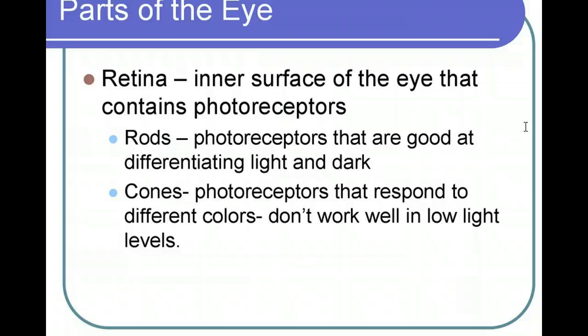The type of cells in your eyes that see color are the cones. The cones respond to different colors — they're the ones that help you see red, blue, green, or yellow — but they don't work well in low light levels. That's why objects don't appear to be the same color at night as they do during the day.